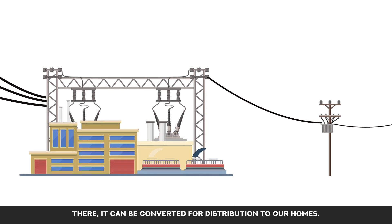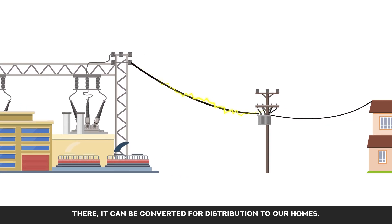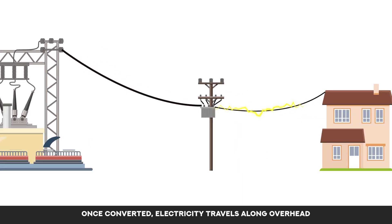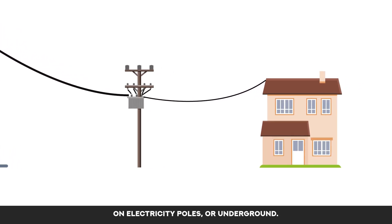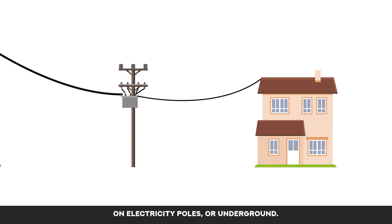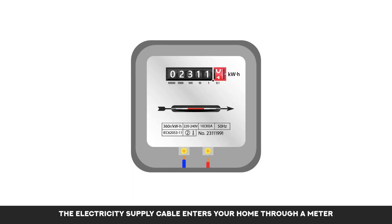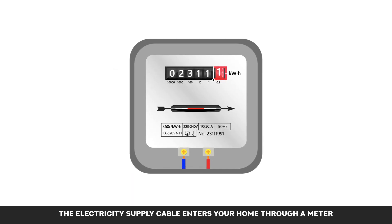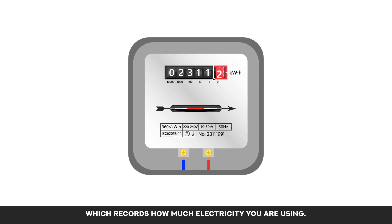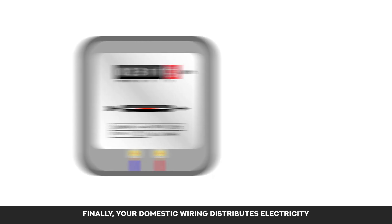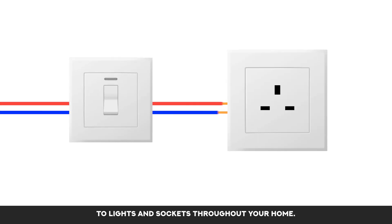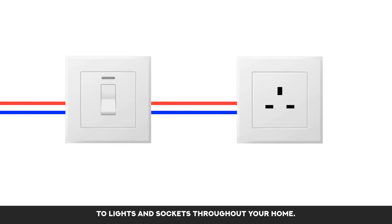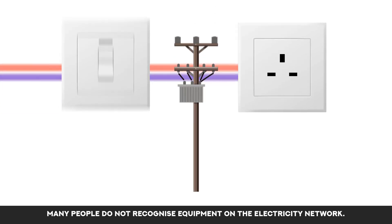There, it can be converted for distribution to our homes. Once converted, electricity travels along overhead on electricity poles or underground. The electricity supply cable enters your home through a meter, which records how much electricity you are using. Finally, your domestic wiring distributes electricity to lights and sockets throughout your home.